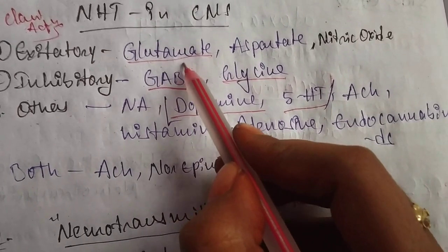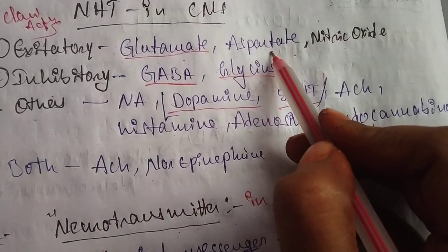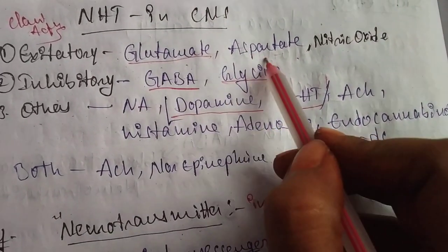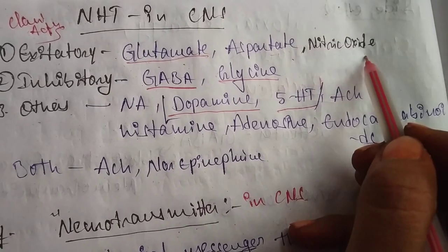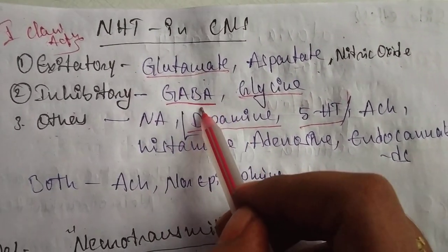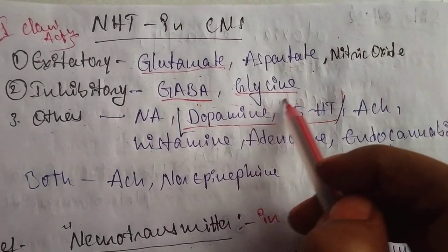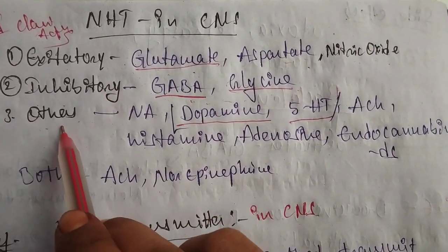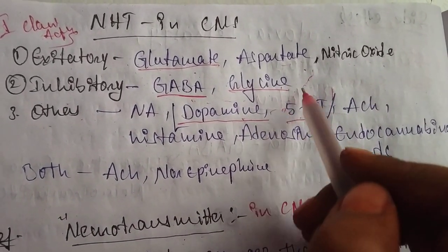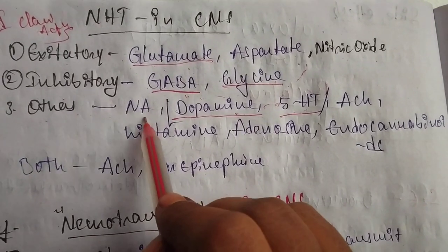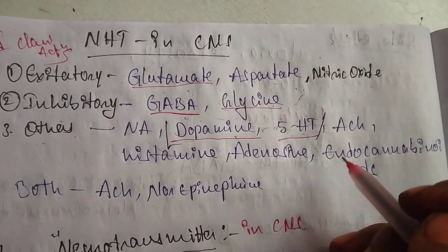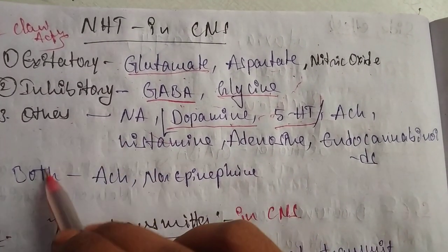Excitatory neurotransmitters are glutamate or glutamic acid, aspartate or aspartic acid, and nitric oxide. Inhibitory neurotransmitters are GABA (gamma-aminobutyric acid) and glycine. Dopamine and 5-HT are also inhibitory neurotransmitters. The others category includes noradrenaline, acetylcholine, histamine, adenosine, and endocannabinoids.